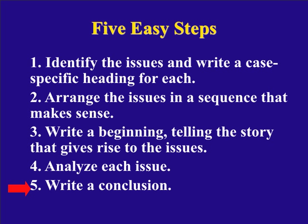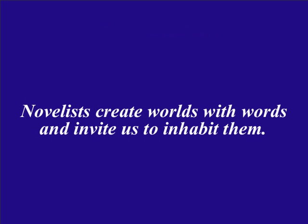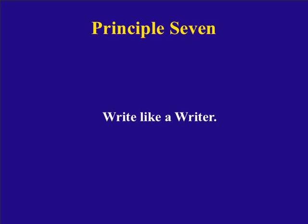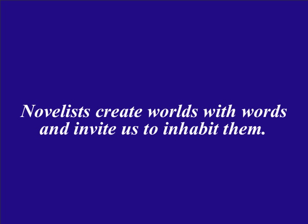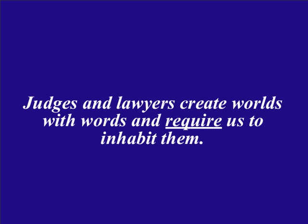Principle seven is: write like a writer. Some of those writers might be journalists like Linda Greenhouse, Jeffrey Toobin, or Jeffrey Rosen, who write for the New York Times or the New Yorker magazine. They write in a way that any literate non-lawyer can understand, and they get it right — they don't dumb it down. There are also techniques we can learn from novelists, though with a big difference: novelists create worlds with words and invite us to inhabit them, whereas judges and lawyers create worlds with words and require us to inhabit them. So you are among the most powerful writers in the world. What you're actually doing is creating the moral universe in which the rest of us must live. Nothing could be more important, and the quality of your writing is the stock and trade of your profession. That's why you want to become the best writer you can possibly be.